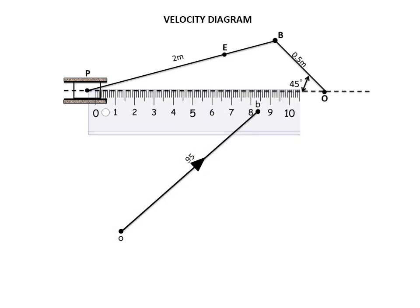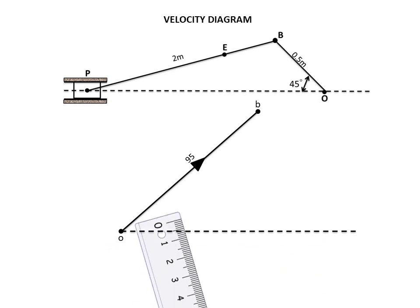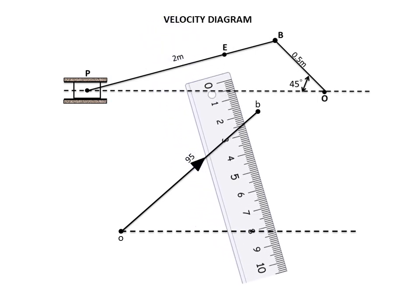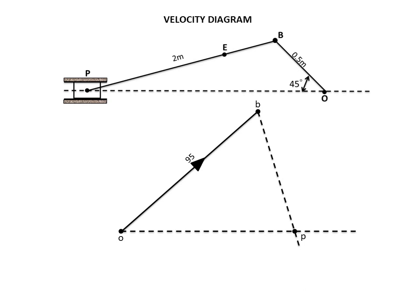Now take the scale again and place it parallel to the horizontal. Remember, the slider moves horizontally in rectilinear motion. For rectilinear motion, the velocity vector is parallel to the motion path — only for rotation is it perpendicular. Transfer this horizontal direction to point O and draw an indefinite line representing the oP vector. We know only the line of action, not the length. Now place the scale perpendicular to the connecting rod, which goes between B and P. Transfer this direction to point B and draw another indefinite line. Where these two dotted lines intersect is your point P, completing the base velocity polygon.